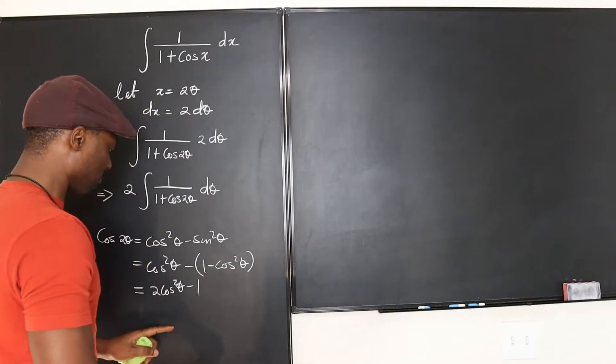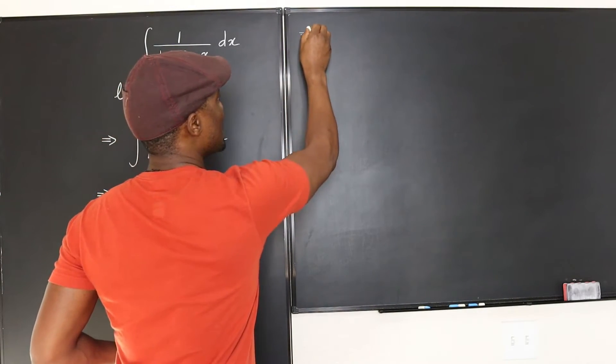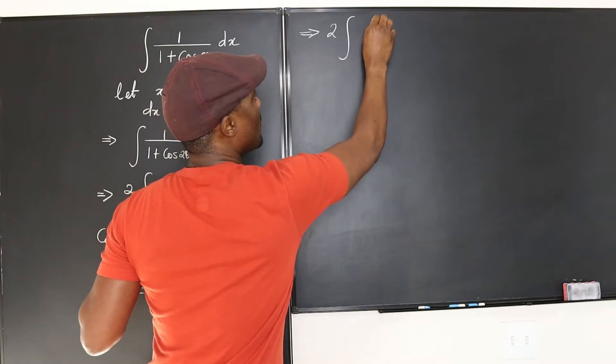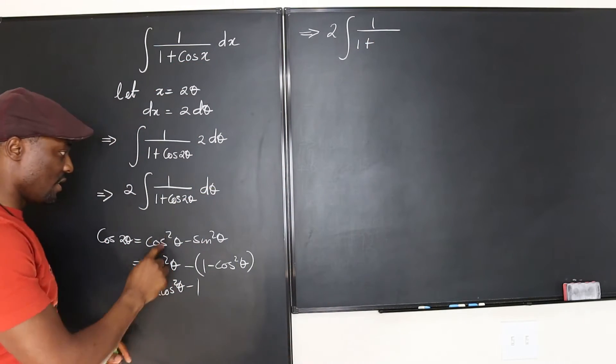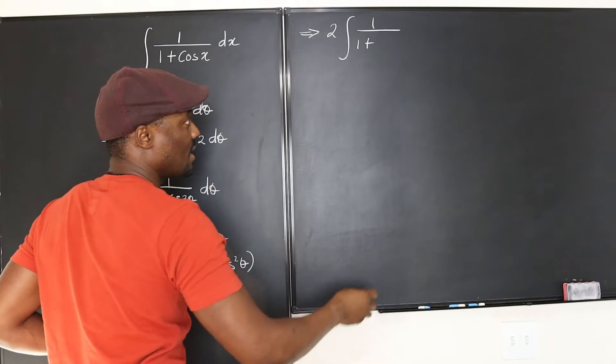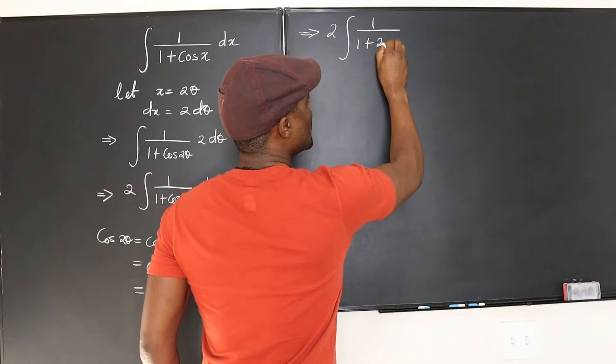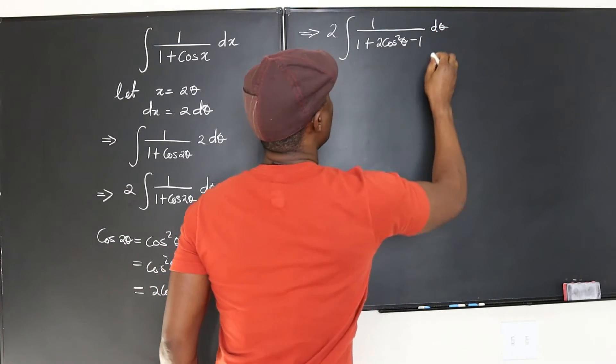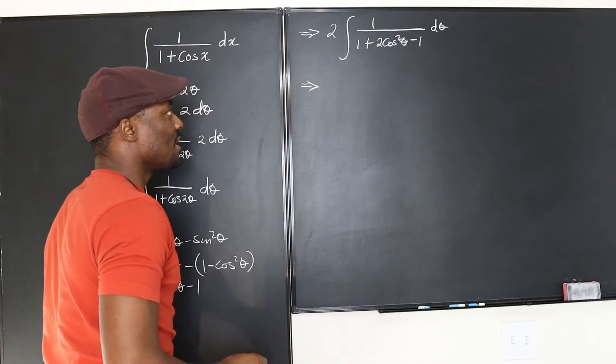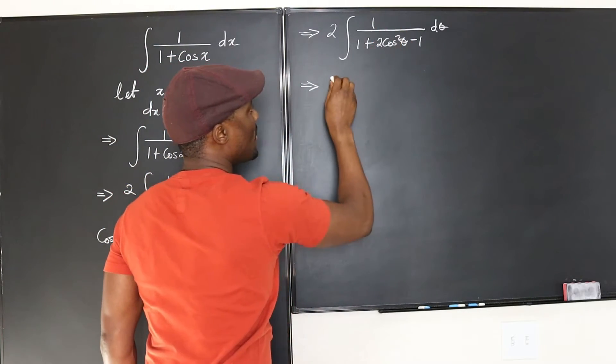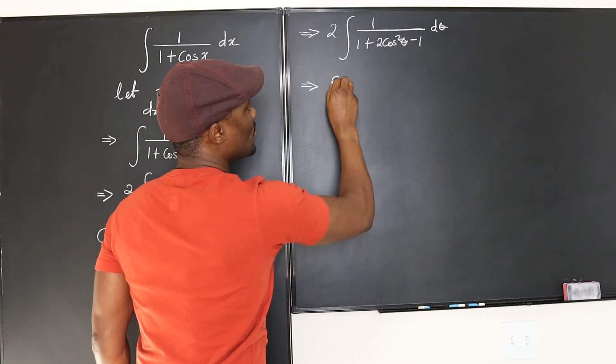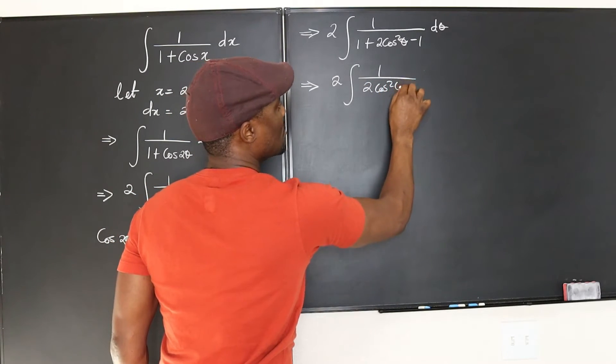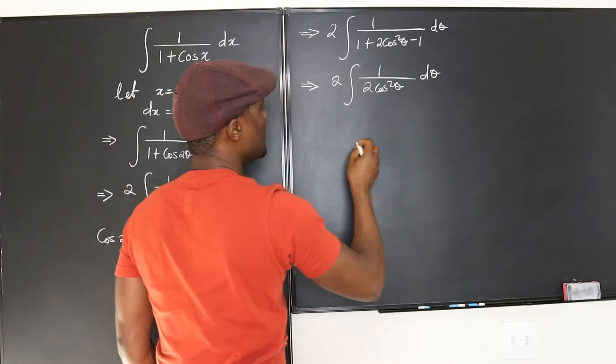So we can go back here and say that the integral we're dealing with actually is the integral is 2 integral of 1 over 1 plus, instead of writing cos 2 theta now, we're going to write 2 cosine squared theta minus 1. 2 cosine squared theta minus 1 d theta. So, and that leads us to, well, 1 minus 1 is 0. So what we have left is just 2 integral of 1 over 2 cosine squared theta d theta.